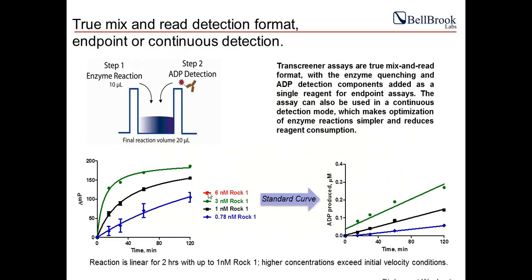The graph below shows an example of raw data from a Transcreener assay. Any competitive binding assay is by nature non-linear — this is the kind of response you get when plotting raw data. To check linearity, you run a standard curve and convert the polarization data into product formed to verify Michaelis-Menten parameters or determine enzymological parameters like KM and Vmax. Running a standard curve is optional — you can use raw data to determine EC50, EC80, IC50, etc. It's only required for determining enzymological parameters.